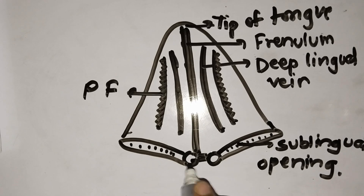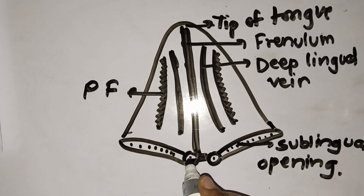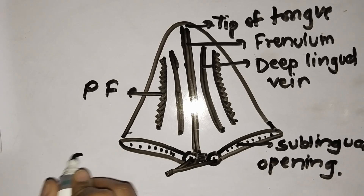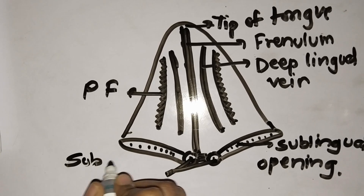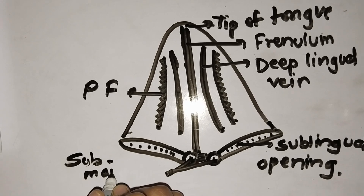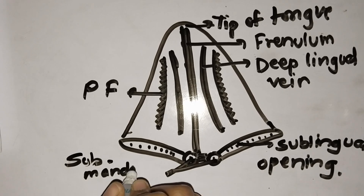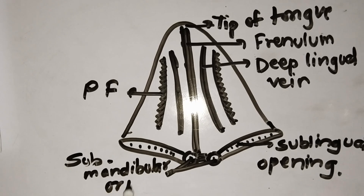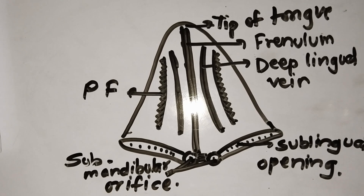Then this is the submandibular orifice. These are the submandibular orifices. Friends, I hope you have understood the tongue structures. Thanks for watching the video.